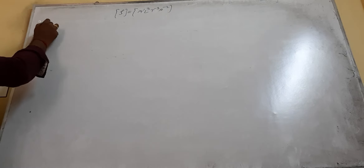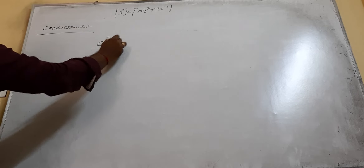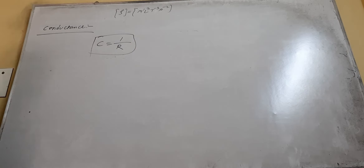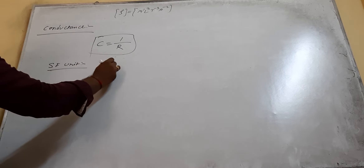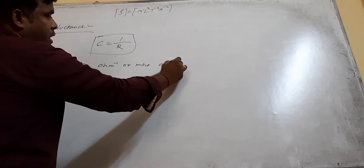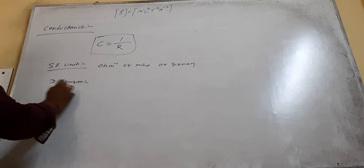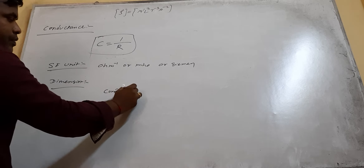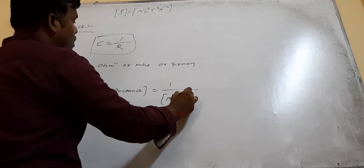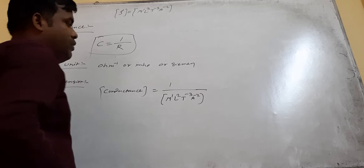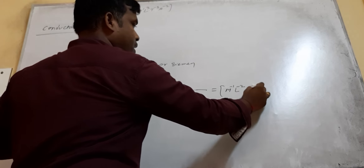Now come to conductance. Conductance is the reciprocal of resistance. Its unit is Ohm-inverse, also called mho or Siemen. The dimension of conductance is 1 divided by resistance dimension M1L2T-3A-2, giving M-1L-2T3A2. This is the dimensional formula of conductance.